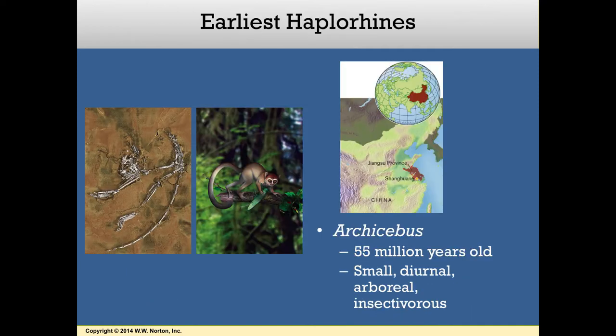A very recent discovery has further complicated the primate fossil record. Artecebus is a remarkably well-preserved skeleton of a very small primate that lived in China 55 million years ago. It has an interesting combination of features found today in both tarsiers and anthropoids, suggesting that Artecebus may be one of the earliest haplorhines. This tiny primate had small eyes but sharp, cusped teeth, indicating that it hunted for insects during the day. It was arboreal, with monkey-like adaptations in the foot for climbing along the tops of branches — evidence that the haplorhine lineage evolved in Asia.